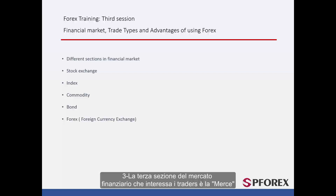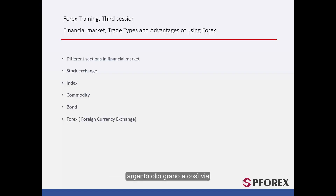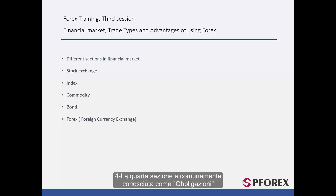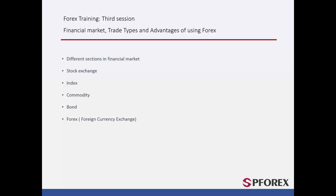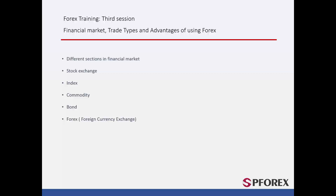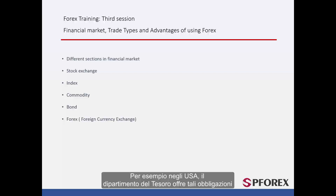The third section of financial markets that interests traders is Commodity. This is where most people intend to buy and sell various goods such as gold, silver, oil, wheat, and so on. The fourth section is commonly known as bonds. The government's bonds and non-governmental shares, with or without fixed-rate security, are easy to purchase. For example, in the USA, the Department of Treasury offers such bonds.